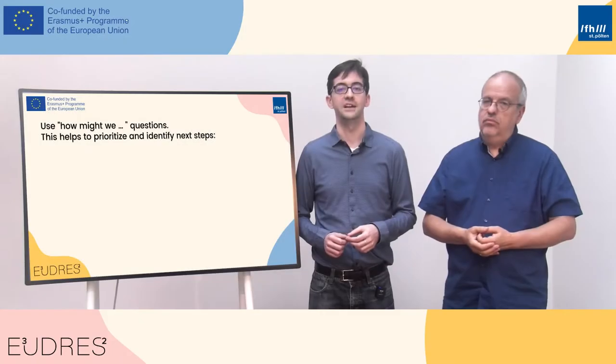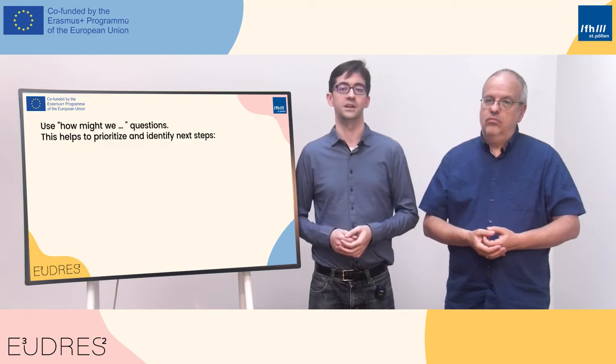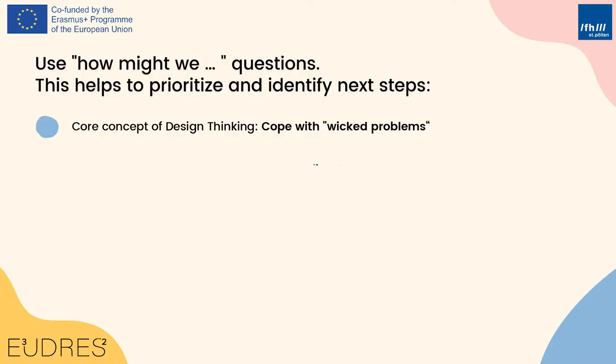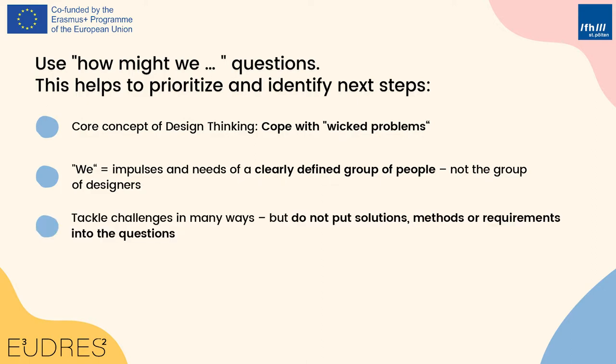During the defining phase, you will also find and develop the 'how might we' questions. Remember, a core concept of design thinking is to find ideas, approaches, and possible solutions to wicked problems. 'We' is not the group of designers, but represents the impulses and needs of a clearly defined group of people. There are many possible ways to tackle challenges.